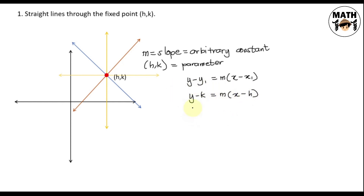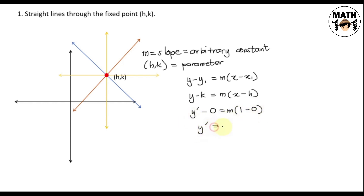Let's differentiate this once. The derivative of y is y prime; the derivative of k — even though it is a parameter, it is still a constant — so that is 0. On the right-hand side, we have a constant m; multiplying by the derivative of the terms: derivative of x is 1, derivative of h is also a constant, so 0. Simplifying, we get y prime equals m.